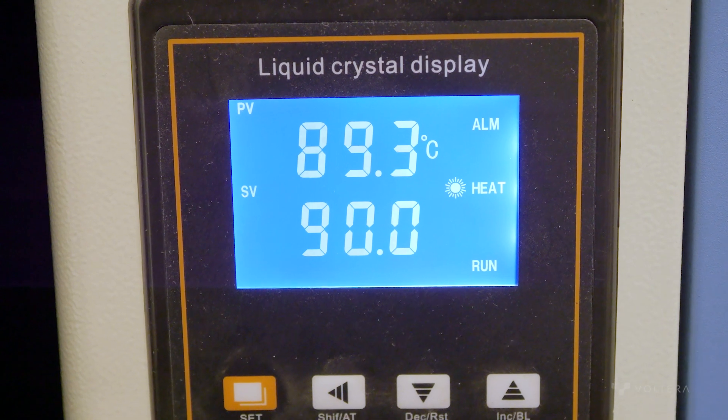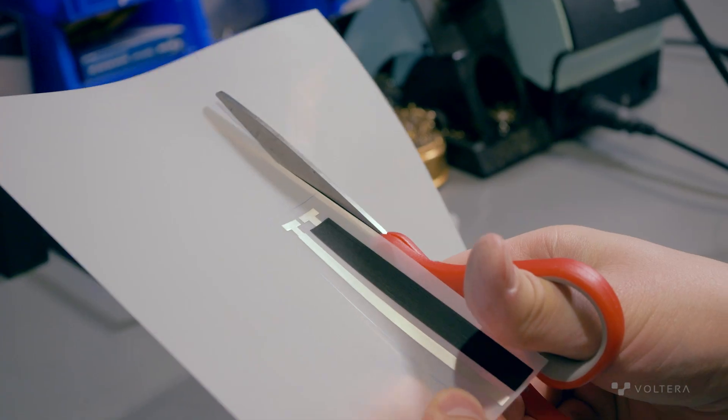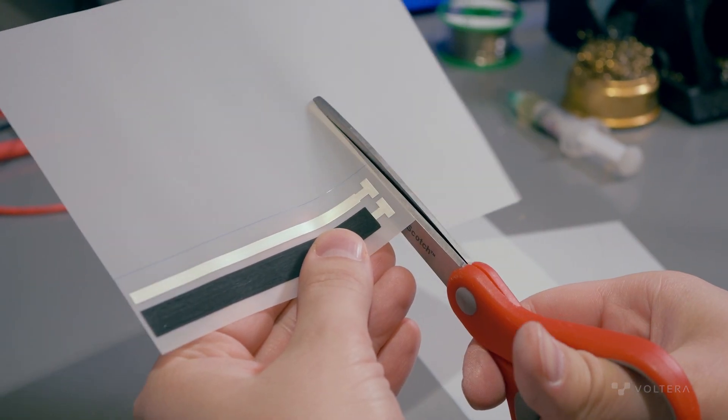After the carbon ink was cured, we were able to measure resistance across the entire print, showing that our ink would be usable as a printed resistor in our potentiometer. After testing the ink, it's time to put it into action.